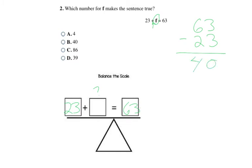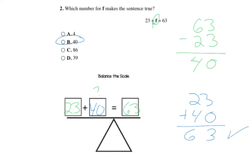I can check that: if I put 40 in, then 23 plus 40 needs to equal 63 — and it does, so answer B is confirmed. If you wanted to use guess and check instead, you'd take 23 plus 4 — that equals 27, not 63, so that's not the answer. Then check 40: 23 plus 40 does equal 63. You'd also verify the remaining choices: 23 plus 86 doesn't equal 63, and 23 plus 39 doesn't equal 63.